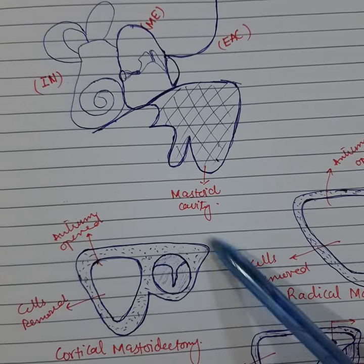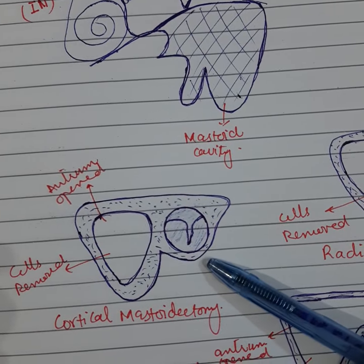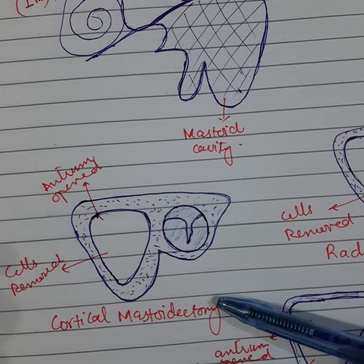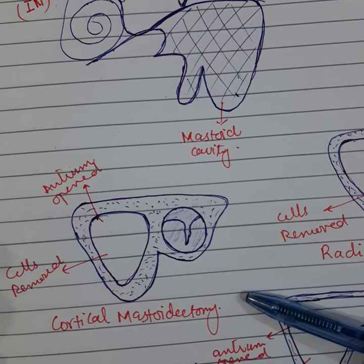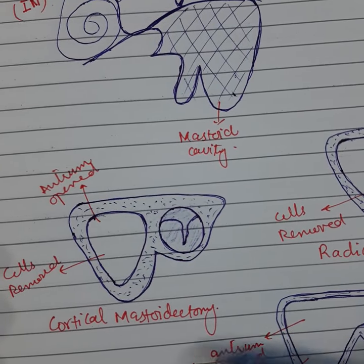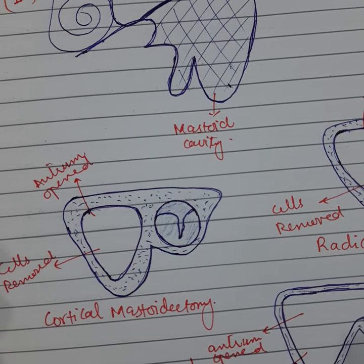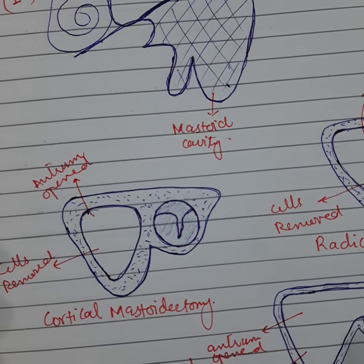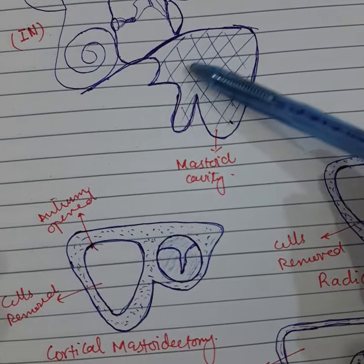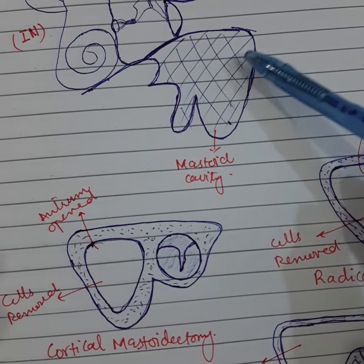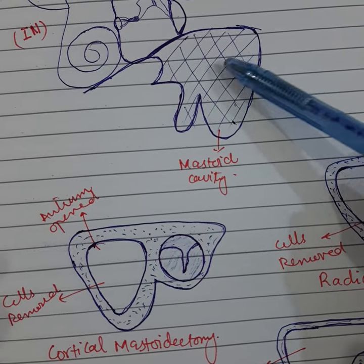If we take a cut section of the external auditory canal and mastoid cavity, we get this kind of picture showing a cortical mastoidectomy. Cortical mastoidectomy is also known as simple mastoidectomy or Schwartz operation. In this, there is complete exenteration or removal of all accessible mastoid air cells, converting the mastoid cavity into a single cavity, as the mastoid cavity has a honeycomb-like appearance due to multiple bony projections.